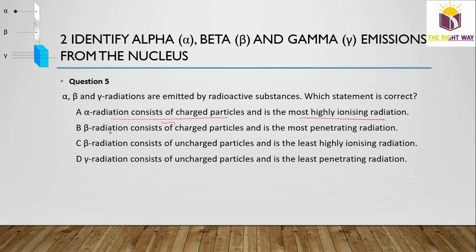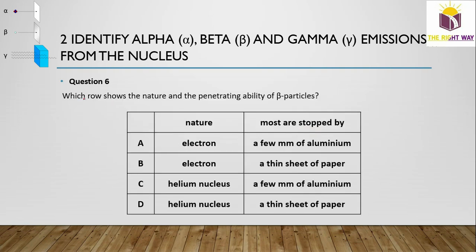Checking the remaining options: Beta radiation consists of charged particles, but it is not the most penetrating — gamma rays are the most penetrating. Gamma radiation consists of uncharged particles and is highly penetrating, not the least penetrating. Therefore, the first option is correct.